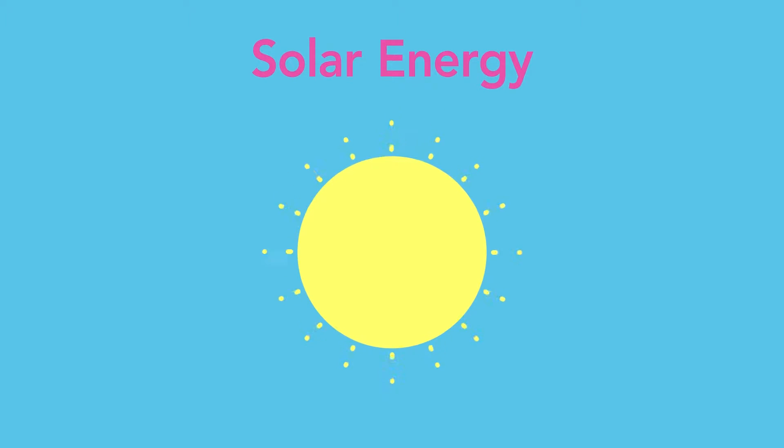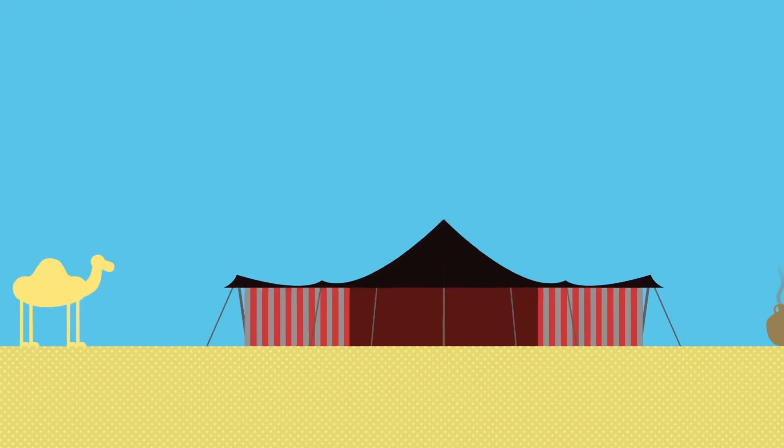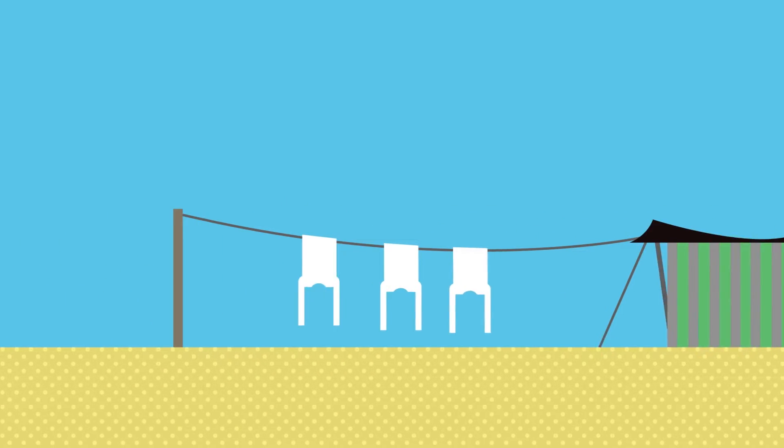People have been using the sun's energy since ancient times for heat, cooking food, removing salt from seawater, and drying clothes.